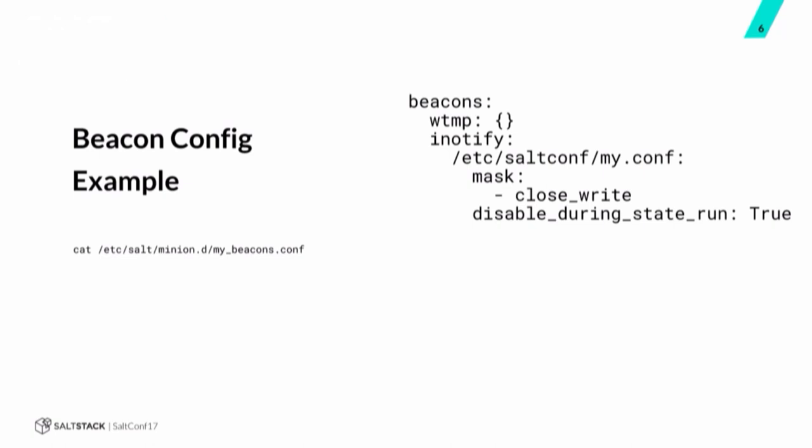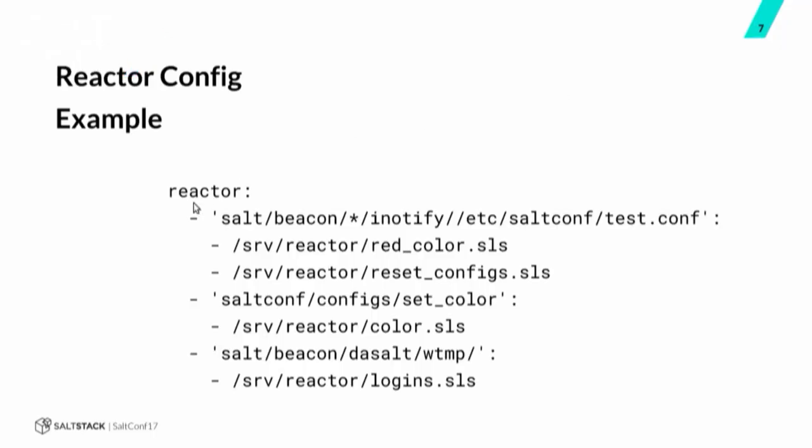Here's an example of the config for setting up the WTMP and iNotify beacons. WTMP has to do with shell logins — it'll tell you if someone's logged in or not. For iNotify, in this example we're looking at a file in /etc/salt/conf/my.conf, and we want to see close-writes. The option 'disable_during_state_run: true' means you don't send an event if you're in a high state modifying that config file — we don't necessarily want to kick off reactions during an intentional modification.